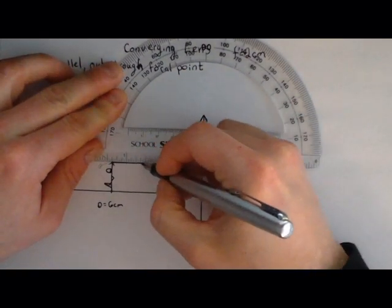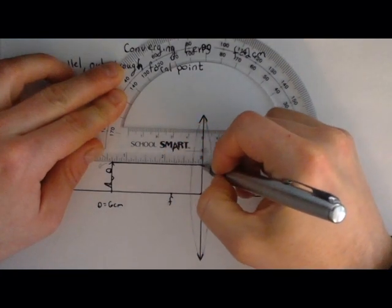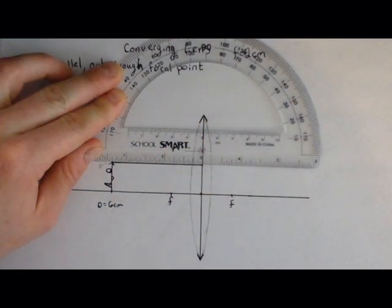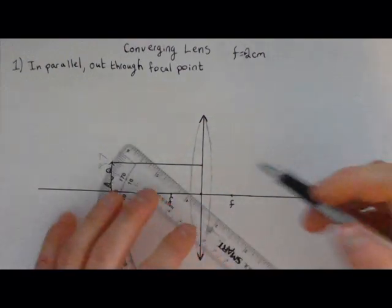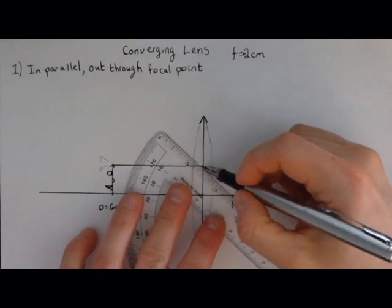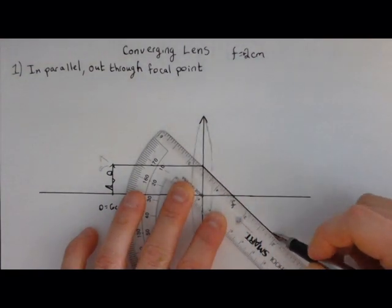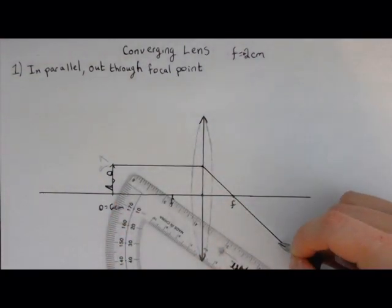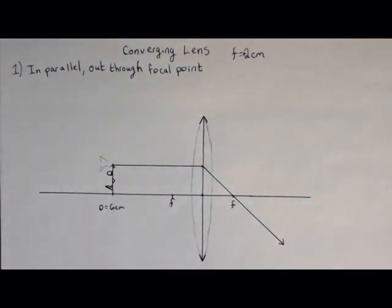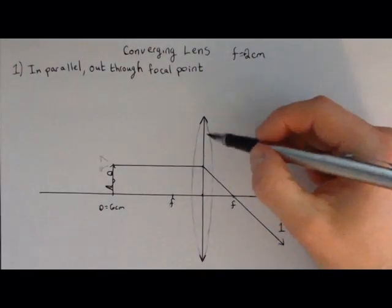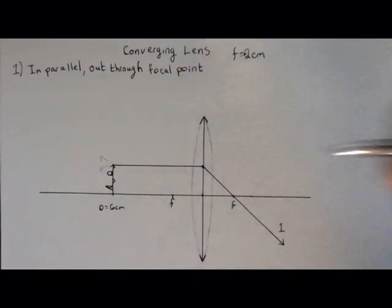And when it does, it's going to go out through my focal point because that's what a focal point is for a converging lens. Converging lenses convert incoming light that's parallel and bend them to their focal points. So there's my first ray.